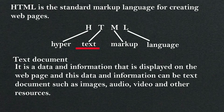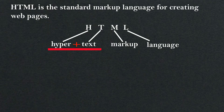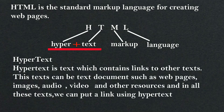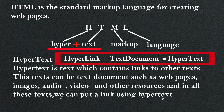'Text' is nothing but data and information that is displayed on the web page. This data and information can be a text document, such as images, audio, video, and other resources. And if you combine these two — hyperlink and text — that is called hypertext. Hypertext is text which contains links to other texts, including web pages, images, audio, video, and other resources. We can put a link using hypertext, meaning hyperlink plus text document equals hypertext.